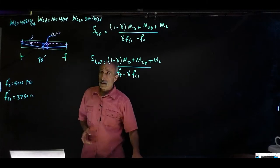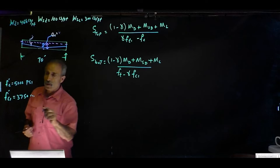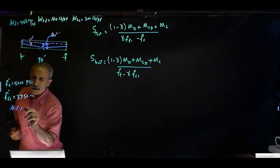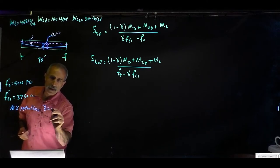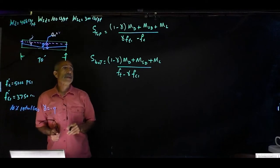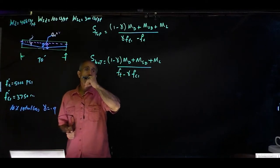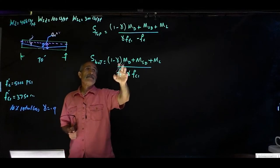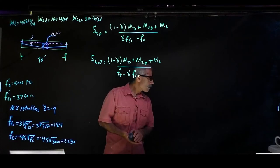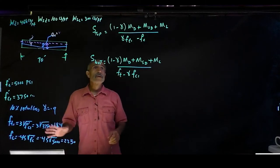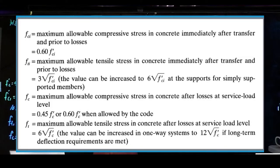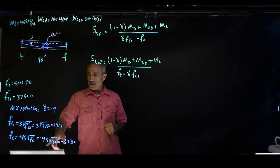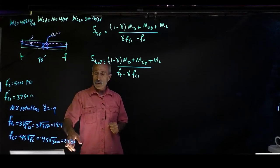The problem states to assume 10% initial loss, so gamma equals 1 minus 0.10, which gives 0.9. Per code, f_ati comes out to 184 PSI, and f_sc comes out to 0.45 times the square root of 5,000, which equals 2,250 PSI.